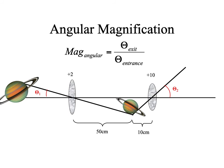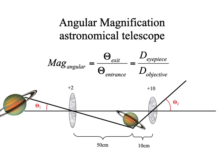The magnification is theta of exit over theta of entrance, but more practically it is the dioptric power of the eyepiece over the objective. I think of the astronomical telescope as a one-lens system with the plus-2 creating an aerial image, and the plus-10 acting like an add that lets us view that aerial image from a tenth of a meter away.